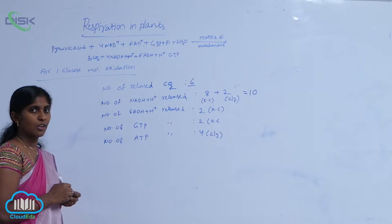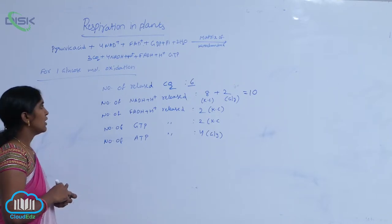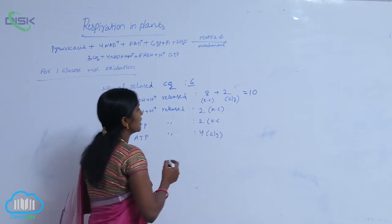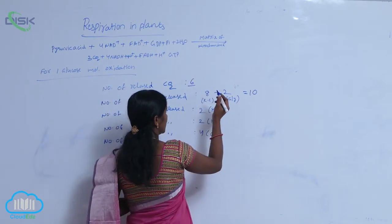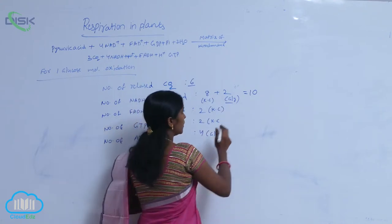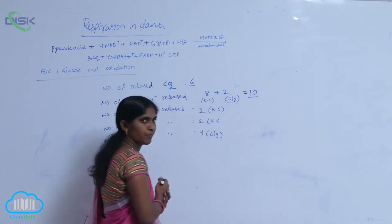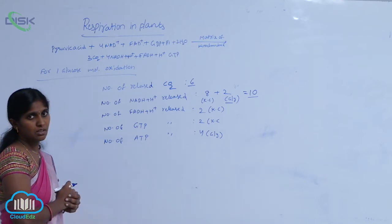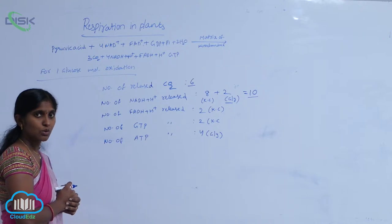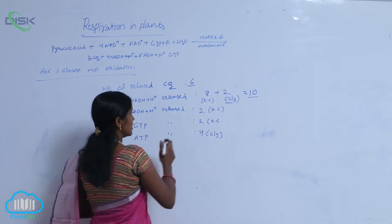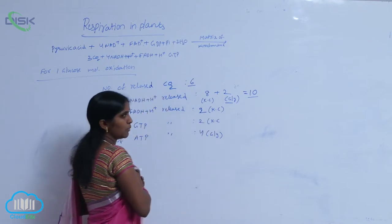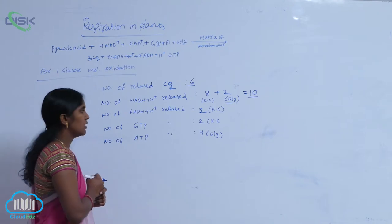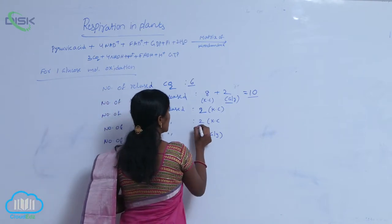During aerobic respiration, the number of NADH2's released from Krebs cycle are 8, from glycolysis they are 2, totally they are 10. The number of FADH2's released if one glucose molecule is oxidized are 2, formed from the Krebs cycle. Number of GTP's released are 2.